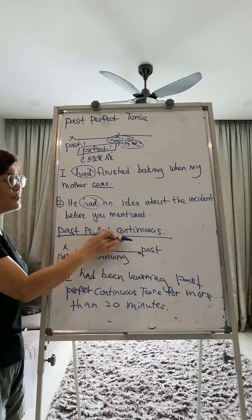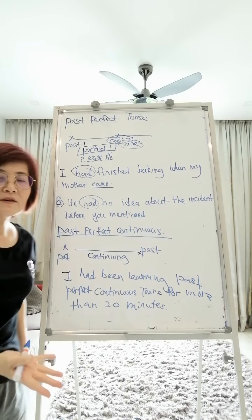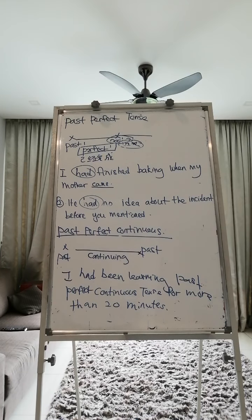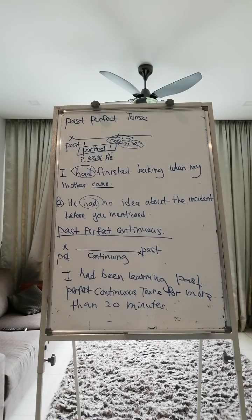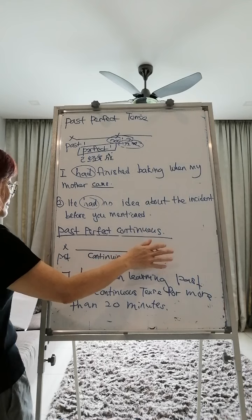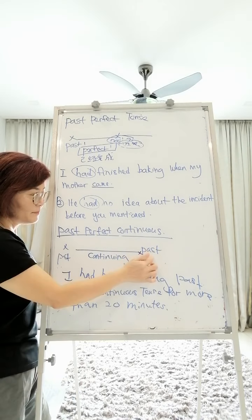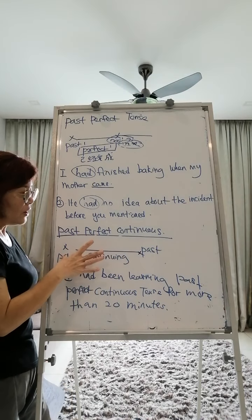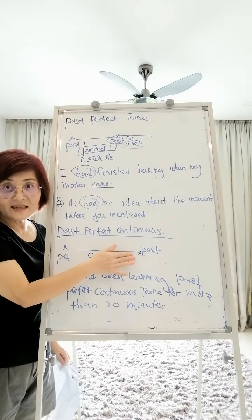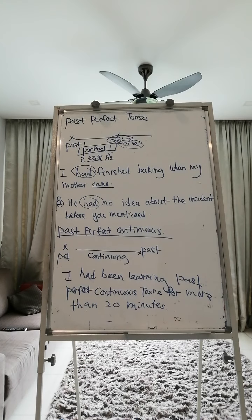Now we go to the past perfect continuous. 'Continuous' means it still carries on. Past perfect continuous describes an action that started in the past, continued in the past, and also ended at a certain point in the past. So we have two parts — past A and past B — and the thing was still happening during that period.